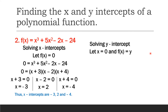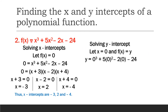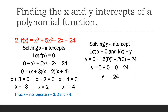To find the y intercept, we change f(x) to y and set x equal to 0. The expression becomes y = 0³ + 5(0²) - 2(0) - 24. Since 0 cubed is 0, 0 squared times 5 is 0, and 2 times 0 is 0, we get y = 0 + 0 - 0 - 24. Thus, the y intercept of this polynomial function is negative 24.